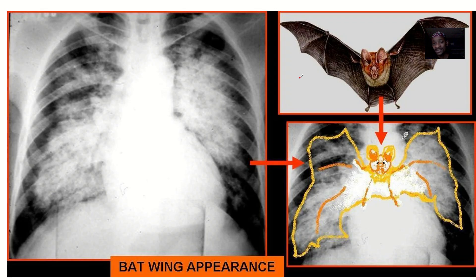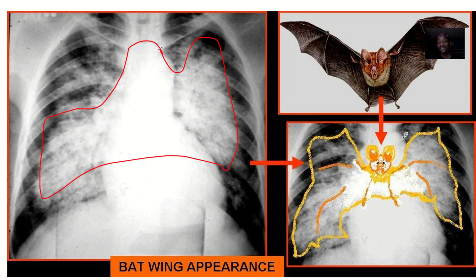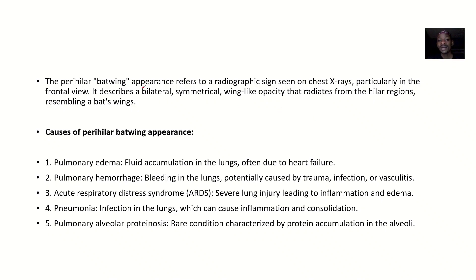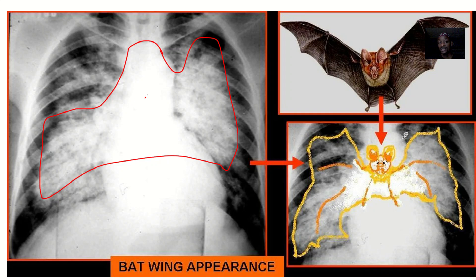Just like the name implies, the Perihilar Batwing Appearance simply means you are seeing a sign that looks like a bat. This sign is looking like a bat. So it refers to a radiographic sign that could be seen on chest x-rays, particularly in the frontal view — you cannot see it from the lateral view.